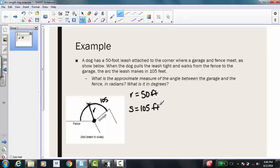It's asking what is the approximate measure of the angle between the garage and the fence in radians. So again, my formula theta equals s over r. Again, we need to check to make sure s and r are both in the same units. And they are, they're both in feet.